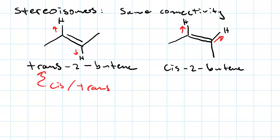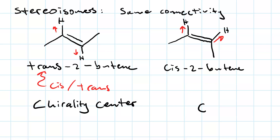Another variety of stereoisomers is molecules that contain chirality centers. For the purposes of this class, we'll limit ourselves to the discussion of chiral carbons, because a chiral carbon has four different groups attached to it — we'll say group A, group B, group C, and group D.